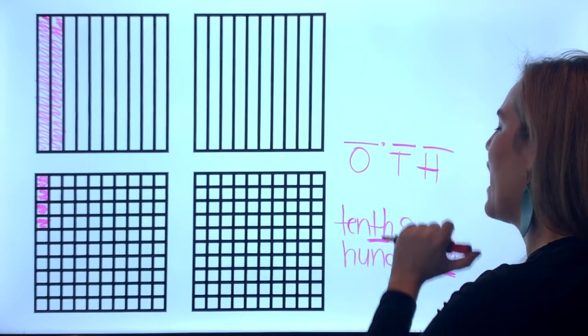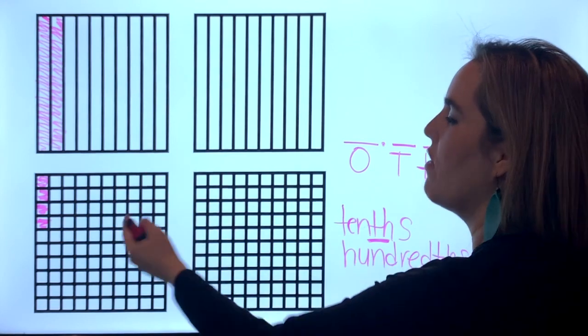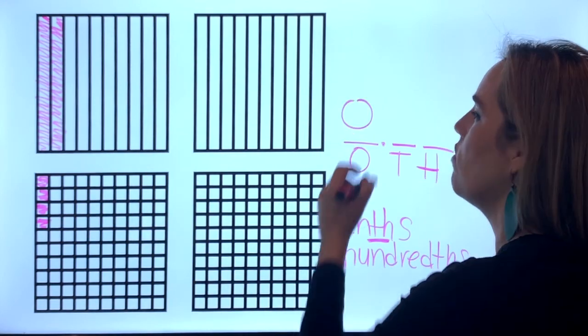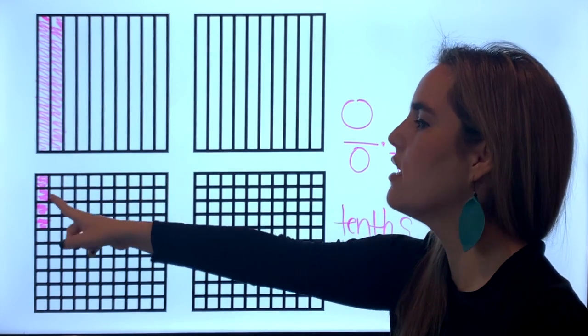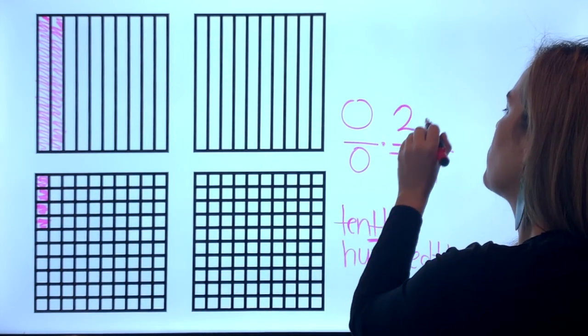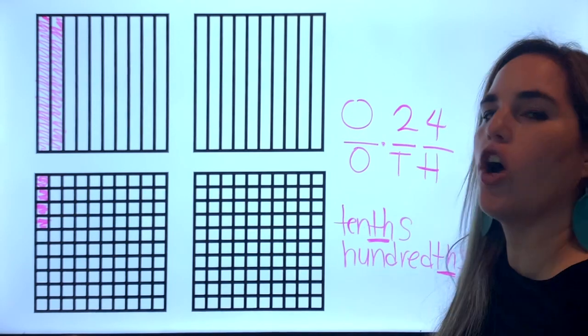Got it. So now do we have a whole? No, so it's zero. And how many tens do we have? We have two tens and four hundreds. So it's twenty-four hundreds.